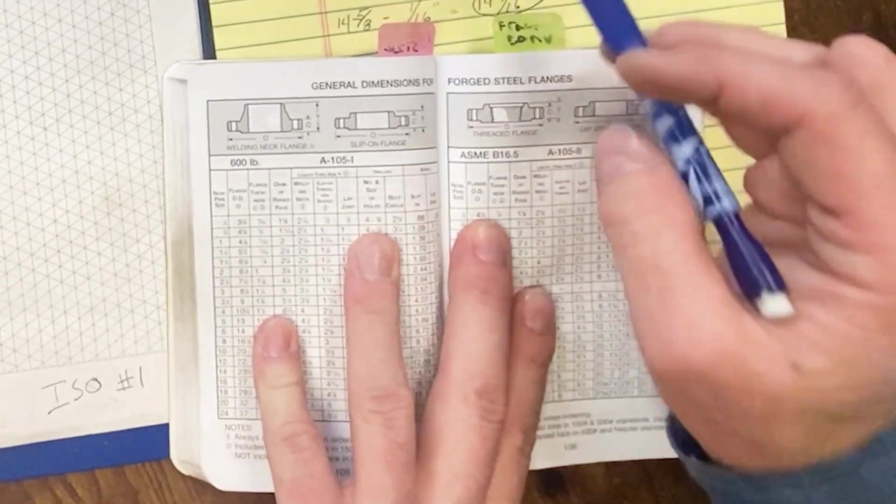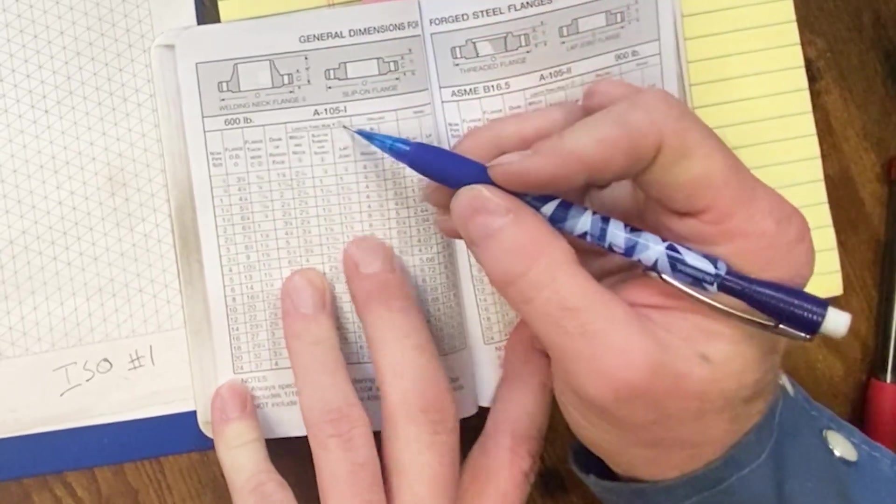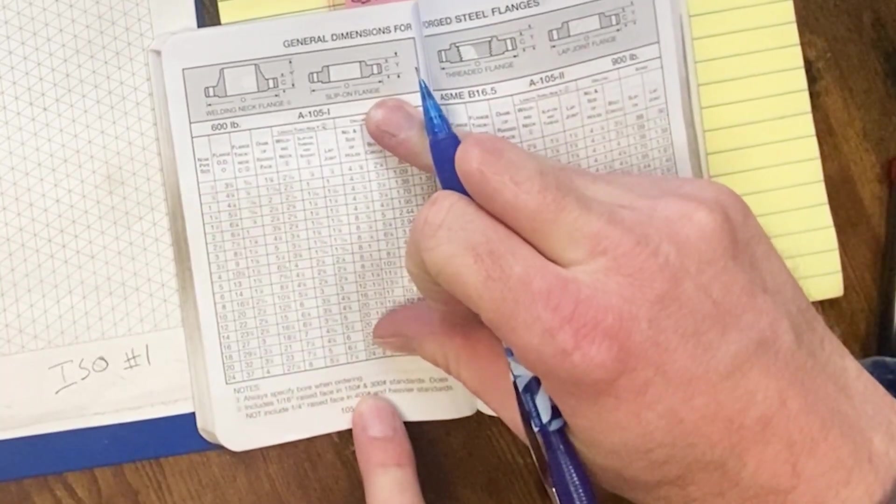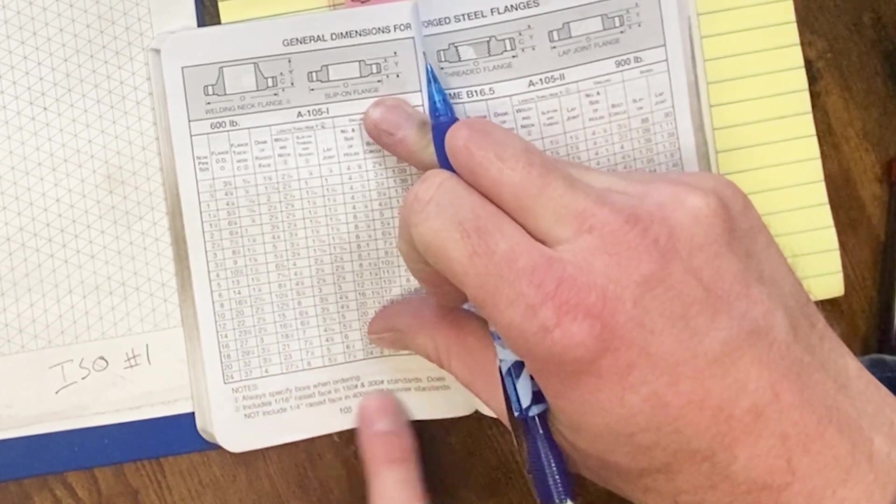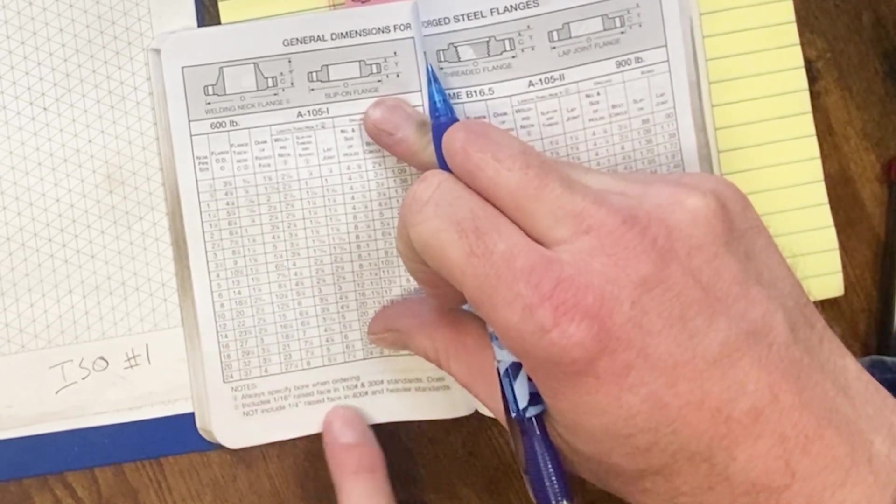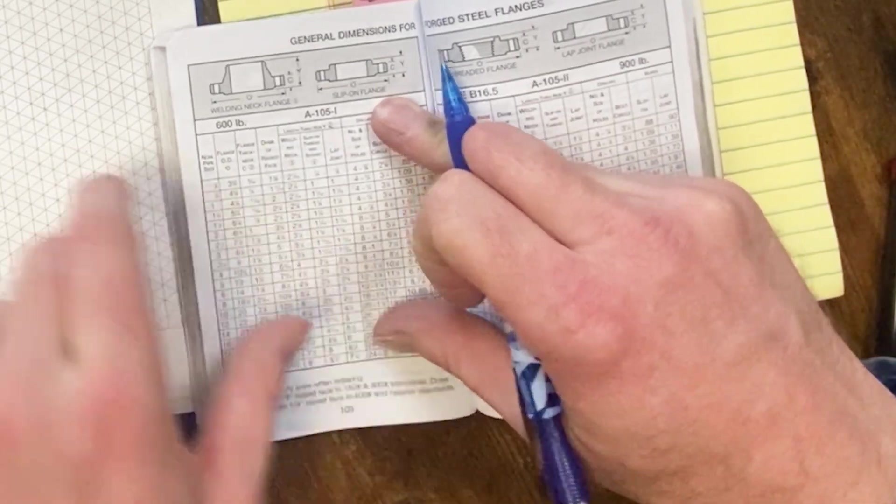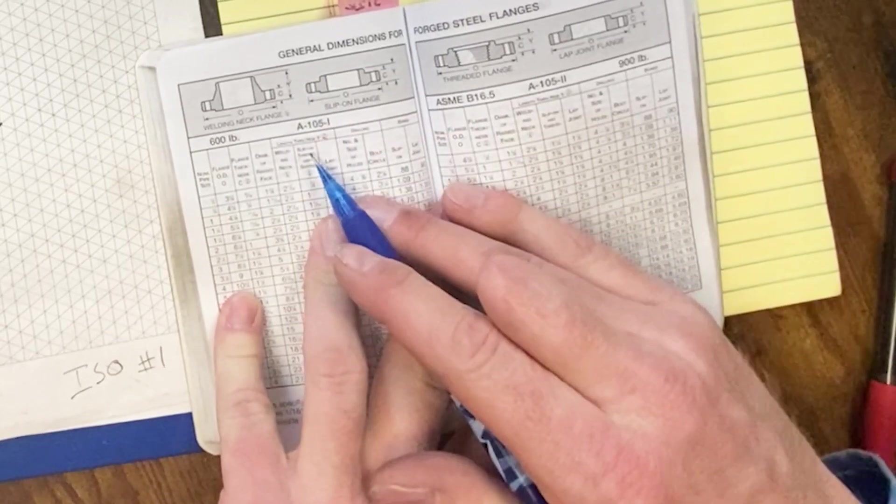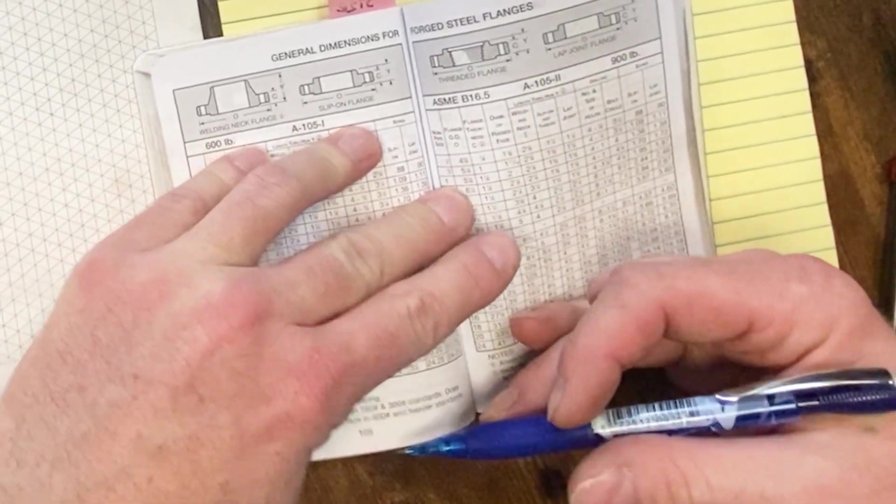600 pound takeout. You look through dimension Y. Note number 2 states that 150 pound and 300 pound flanges includes a 16th inch raised face. But on anything bigger than 400 pound flanges, there's a quarter inch raised face that's not included in that. So we have to add that to everything. You've got to watch them little notes in here because it'll mess up your dimension by 3/16ths of an inch.